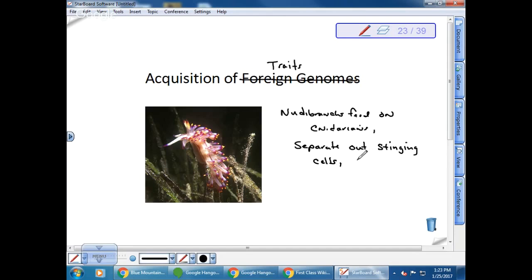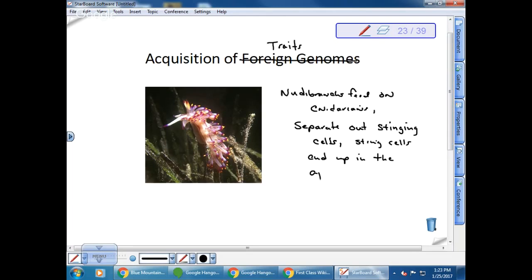Somehow they get them into their tentacle-like appendages on the surface of their back. So these appendages right here are brightly colored and they also possess nematocysts. They separate out the stinging cells, and then the stinging cells end up in the appendages on the back of the animal. So what this means is that the nudibranch now has a defense mechanism. It's not a defense mechanism that it inherited, but it's a defense mechanism that it ingested. They don't really understand how all that works at a cellular level, but it seems to work quite well.